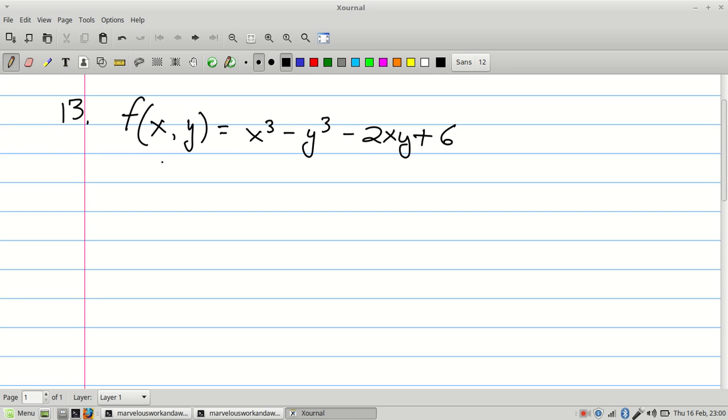We're going to do some partial derivatives to get the critical points. The partial derivative of f with respect to x is going to be 3x squared minus 2y. The constant's obviously going to go away, and if you're taking the derivative with respect to x, that has to go away because y is a constant with respect to x.